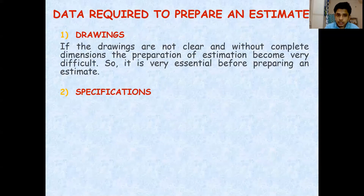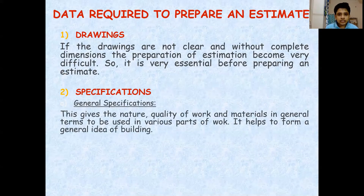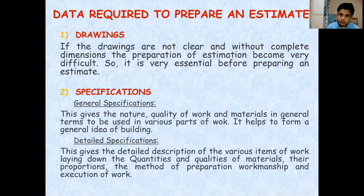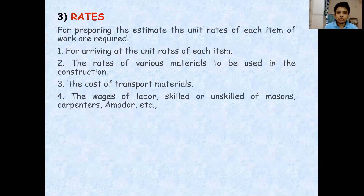The next data required is the specification. Specification means the quality or type of material that will be used. There are two types: general specification, which gives an idea about the entire work, and detailed specification, which goes item by item — various items of work, their quantities and qualities are mentioned. For example, specifying first class brick in a particular element, or specifying the grade of concrete and type of reinforcement in a beam.